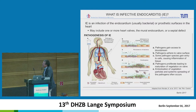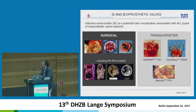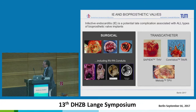These vegetations may embolise and cause a general infection. So no matter what valve is implanted, if it's a biological one or another prosthesis, by surgical means or transcatheter means, every prosthesis has a risk for infective endocarditis.